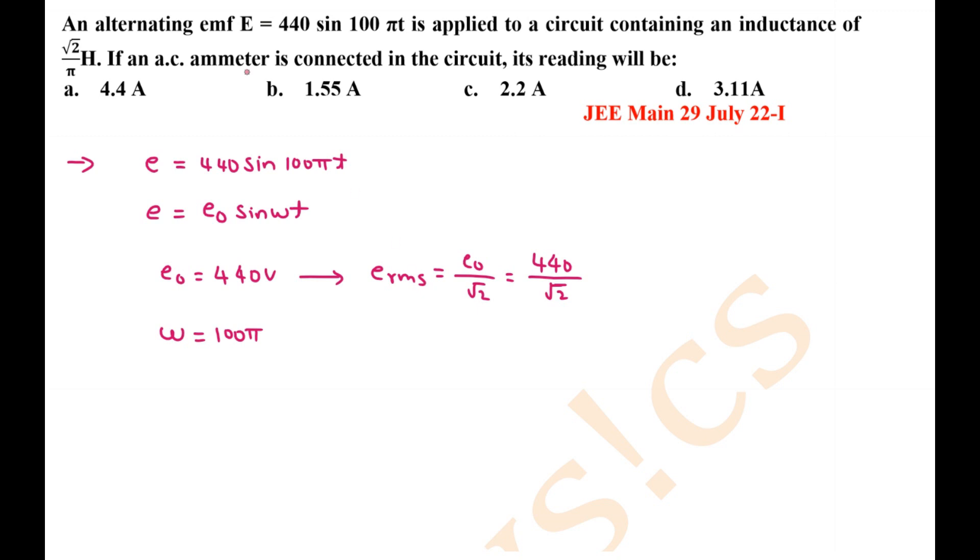Now it is asked to find the reading of ammeter. Ammeter always measures the root mean square current value. So to find root mean square current, we must know the value of opposition.